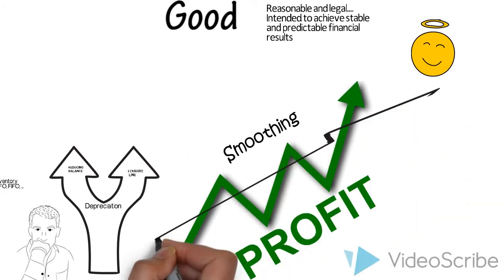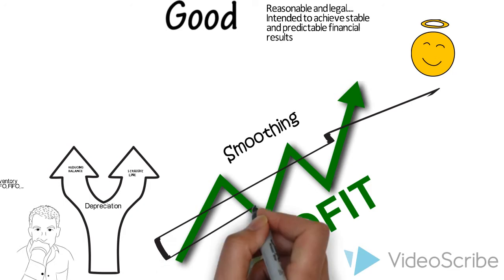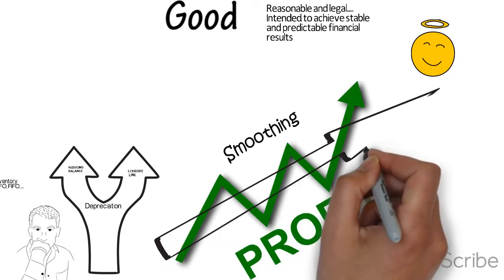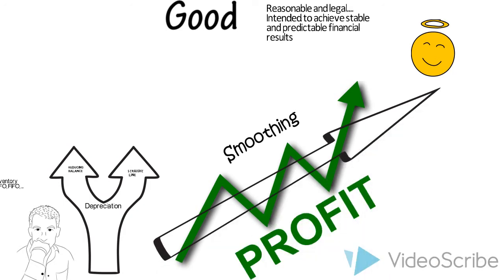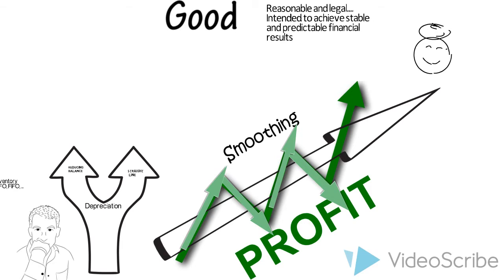Earnings quality is about whether the earnings that we report now are consistent with future earnings. Check out this graph. Which arrow do you think provides the best prediction of future performance?